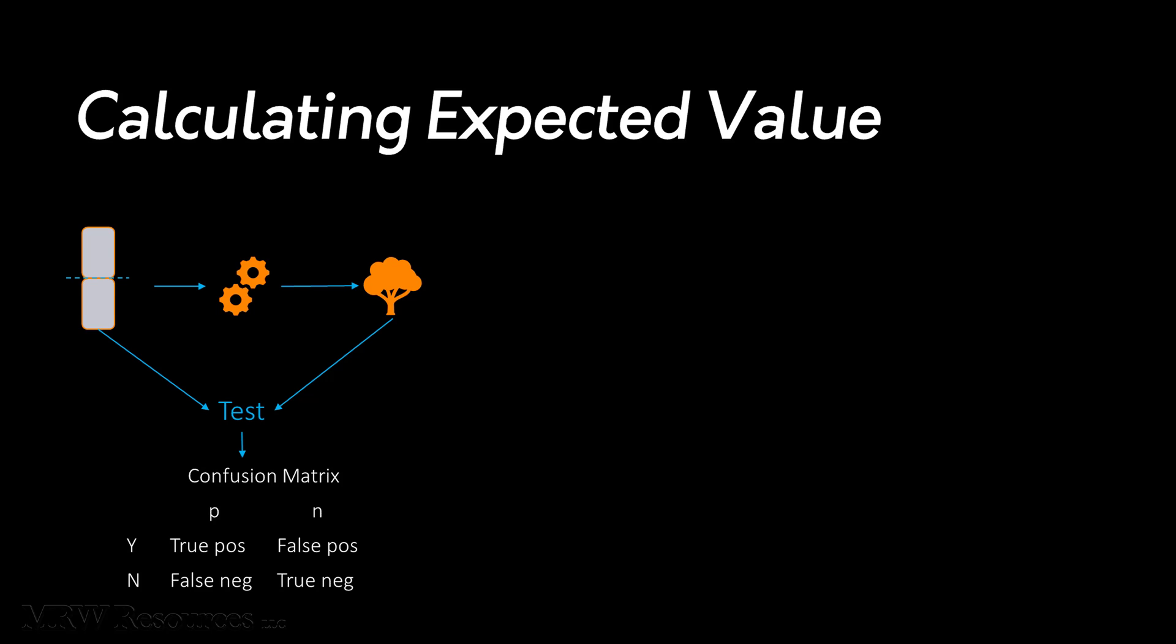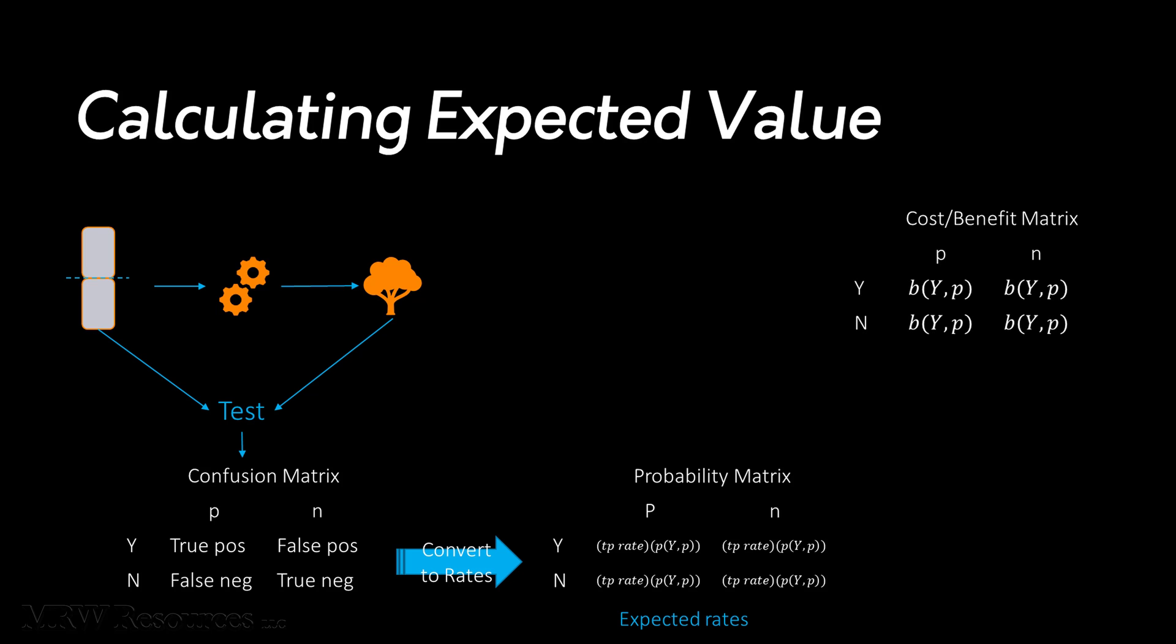Next, we can apply our class accuracy rates against our expected class distribution to the full population, creating a probability matrix for the various types of outcomes. Meanwhile, probably in the business understanding phase of the project, we have determined the costs and the benefits for our potential outcomes. By multiplying that probability matrix by the cost-benefit matrix and summing the totals, we can derive our estimated value for each model.